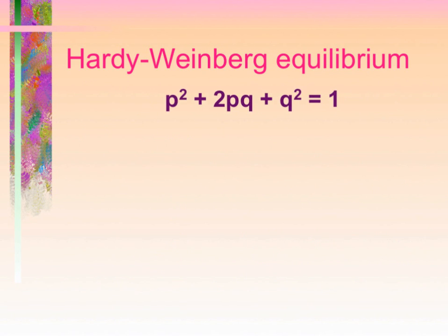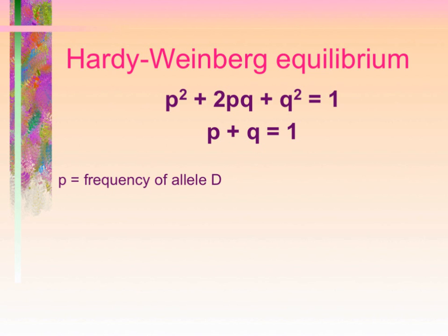The Hardy-Weinberg equilibrium equation is: p² + 2pq + q² = 1. This equation is provided on your data sheet for the exam. Alongside it, p + q = 1, where p represents the frequency of the dominant allele and q represents the frequency of the recessive allele. When we say p + q = 1, we mean that the dominant allele and recessive allele together make up all the alleles for that gene in the population.